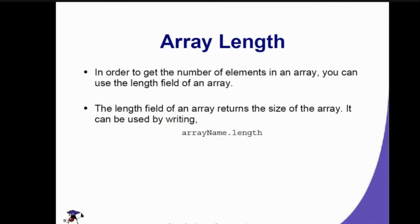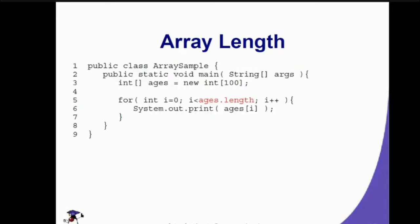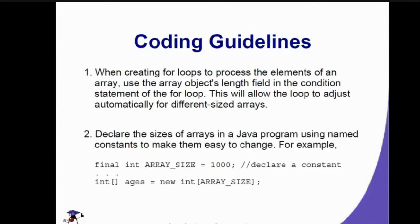To get the number of elements in an array, we always use the length field. The length field of an array returns the size of the array, accessed by writing the array name followed by .length. When creating for loops to process elements of an array, we use the array's length field in the condition statement so the loop adjusts automatically for different array sizes. You can also declare the size using a named constant, for example: final int ARRAY_SIZE = 1000.